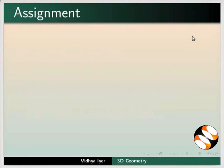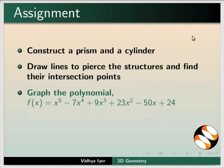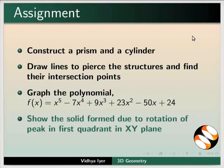As an assignment, construct a prism and a cylinder anywhere in 3D space. Draw lines to pierce the structures and find their intersection points. Graph the given polynomial. Show the solid formed due to rotation of the peak in the first quadrant in the XY plane.